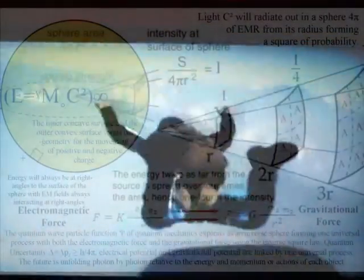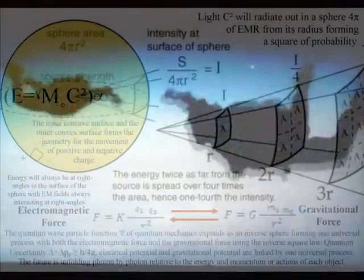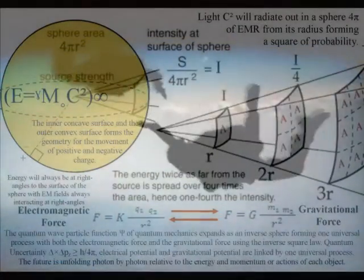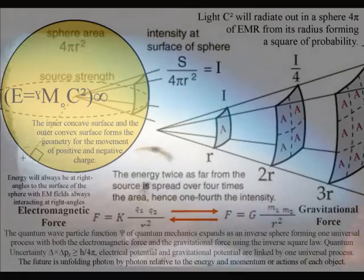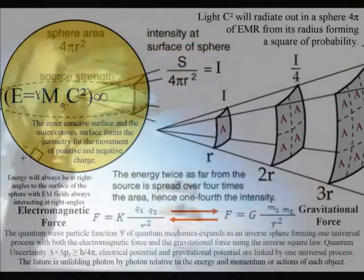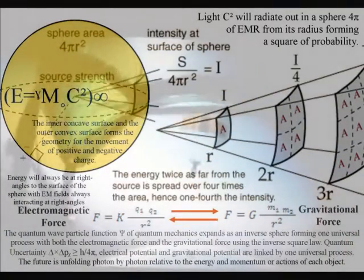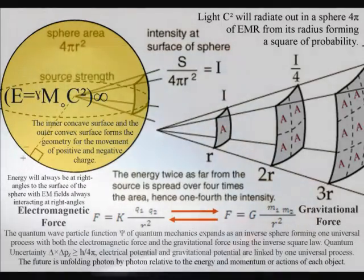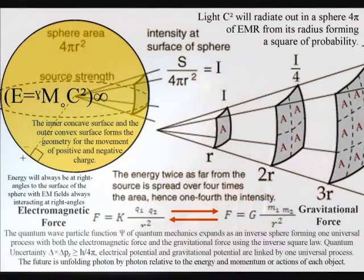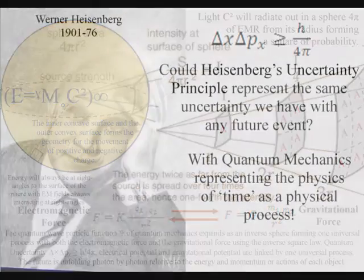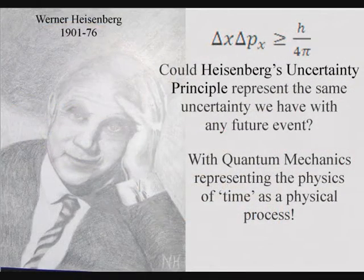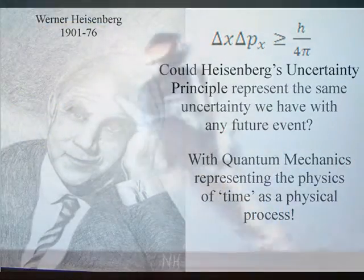Within such a process gravity is a secondary force to electromagnetism and therefore unfolds at the speed of light. At the smallest scale of this process the uncertainties and possibilities of everyday life are represented mathematically by Heisenberg's uncertainty principle.